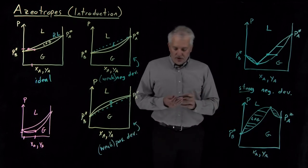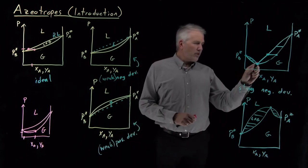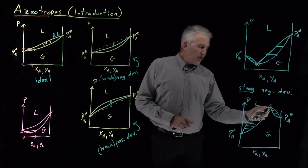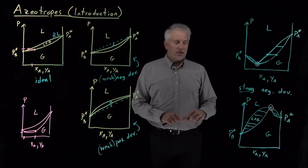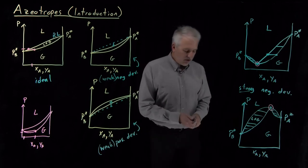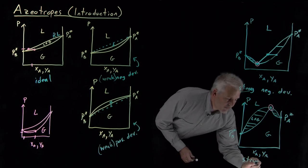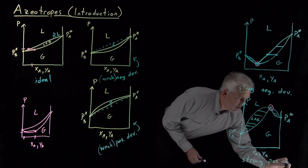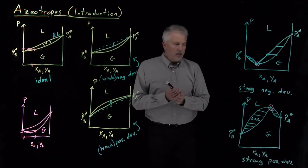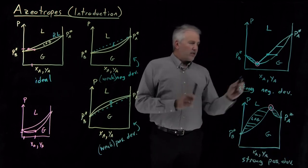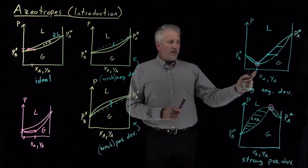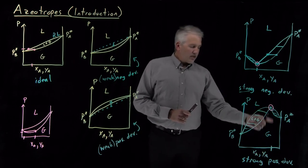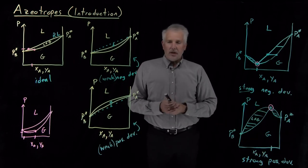So these two unique points where the minima of the curves meet when I have negative deviations, or where the maxima of the pressure curves meet when I have strongly positive deviations, those points are called azeotropes. In particular, a solution with a concentration that is the concentration of this special point on these diagrams, that solution is called an azeotropic mixture of the two solvents.